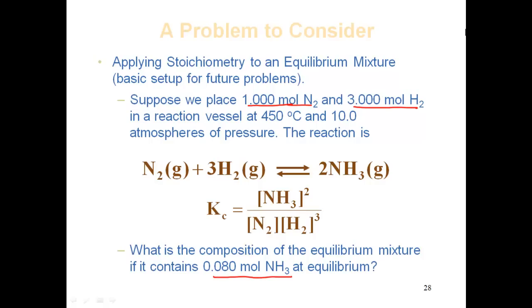And it tells us the moles of ammonia at equilibrium. So we basically know two initials and we know one equilibrium, and what we want to know is what is the equilibrium composition of all three components.